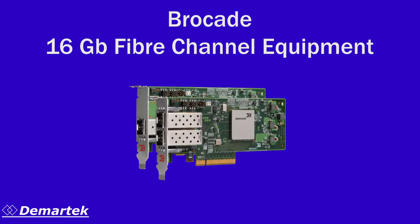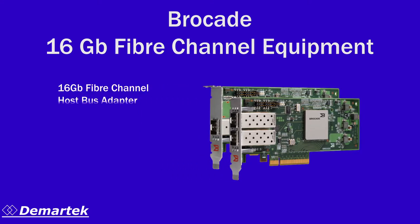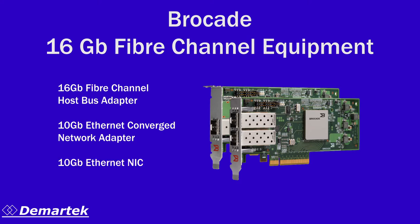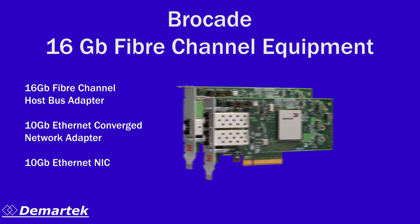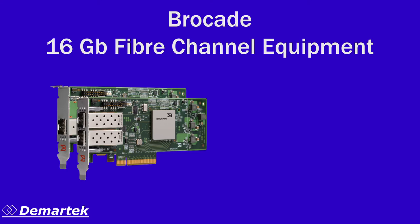The Brocade 1860 fabric adapter is a new class of multi-function adapter. It can be configured as a 16 gig fiber channel host bus adapter, a 10 gig Ethernet converged network adapter, or a 10 gig Ethernet NIC. With a dual port Brocade 1860 fabric adapter, multiple protocols can be run simultaneously on the same adapter, including fiber channel, FCoE, TCP/IP, and iSCSI.